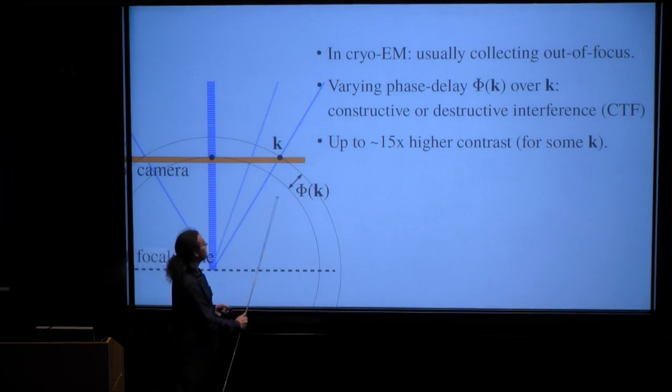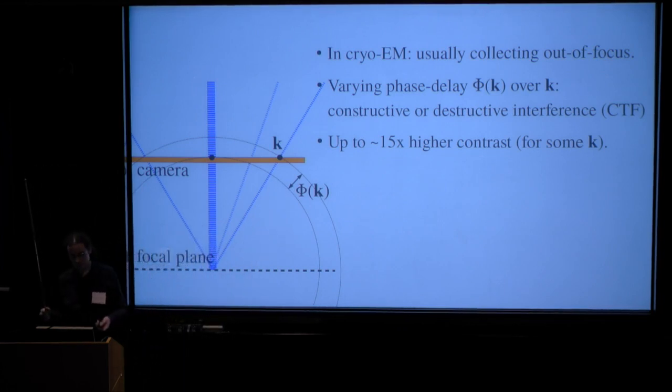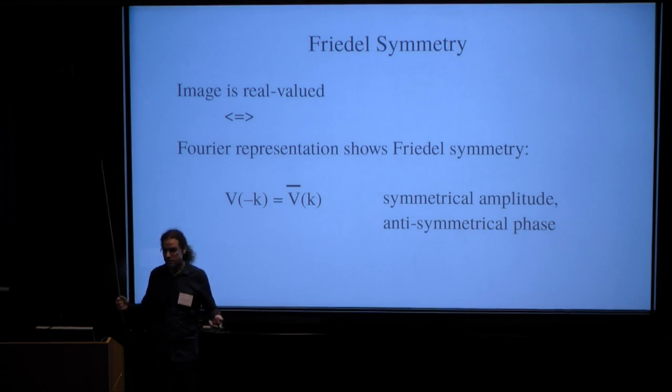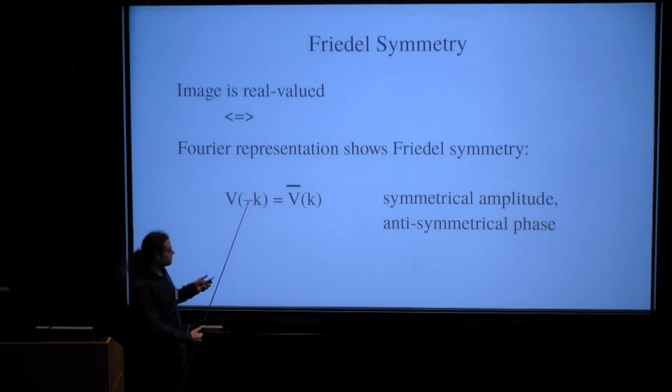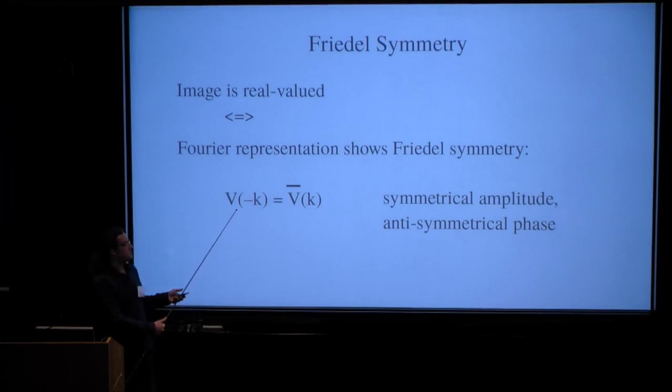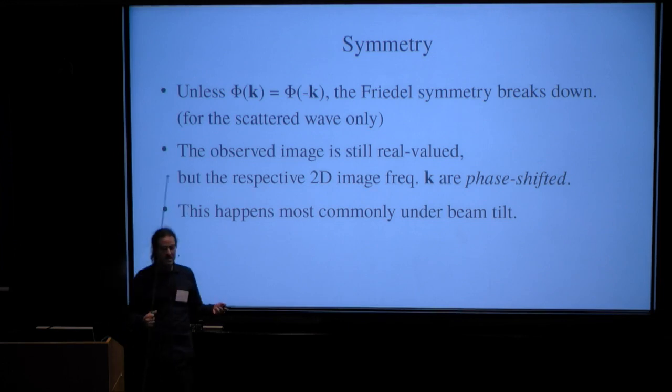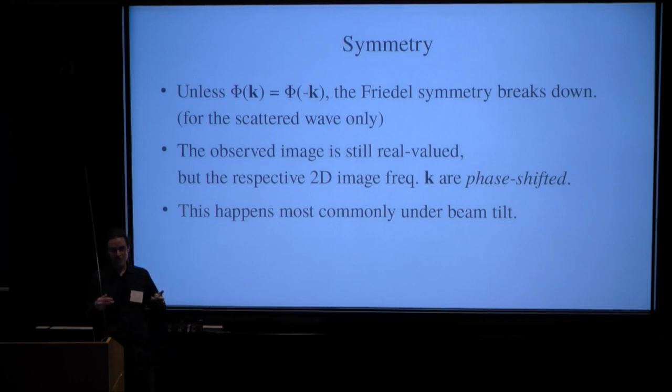And this phase delay φ is what I will refer to as the aberration phase delay. Now another very important property is Friedel symmetry. Because the image that the electron sees is real valued, its Fourier representation exhibits this symmetry. That is, the complex amplitudes at spatial frequency k is the complex conjugate of that at minus k. So the absolute amplitude is symmetrical, the phase is anti-symmetrical. Now if the scattered rays corresponding to k and minus k are delayed by different amounts, this breaks Friedel symmetry.